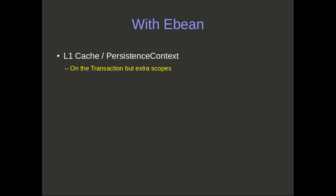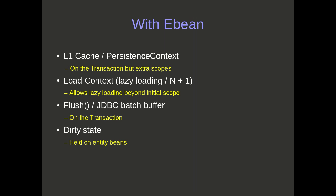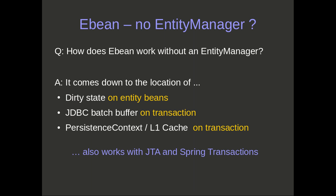As a summary with eBean: the L1 cache is on the transaction; lazy loading allows loading beyond the initial scope, like EclipseLink; flush and batch processing control is on the transaction; and dirty state is held on the entity beans themselves. Coming back to our original question — eBean has no entity manager, so how does it do it? It comes down to this: the dirty state is on the entity beans, and the JDBC batch buffer and persistence context are on the transaction.